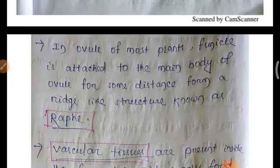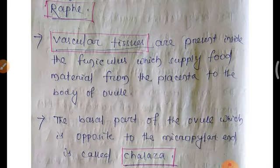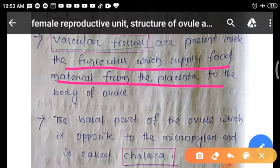The raphe: in the ovule of most plants, the funicle is attached to the main body of the ovule for some distance, forming a ridge-like structure known as raphe. Vascular tissue is present inside the funiculus and supplies food material from the placenta to the body of the ovule.